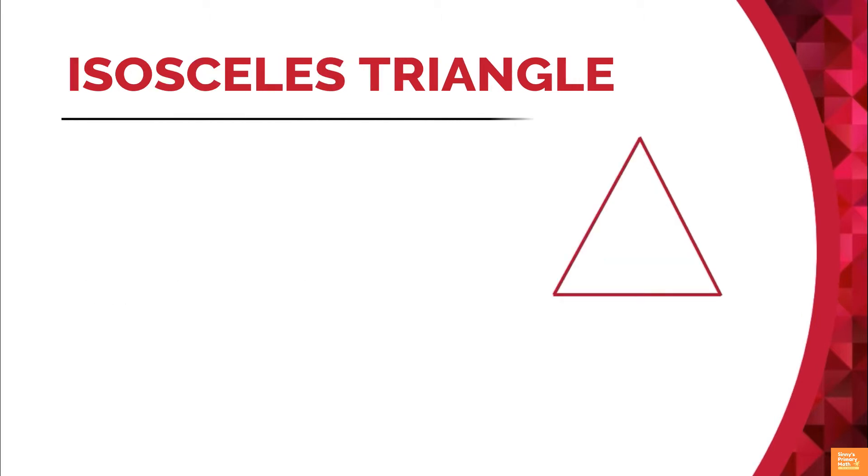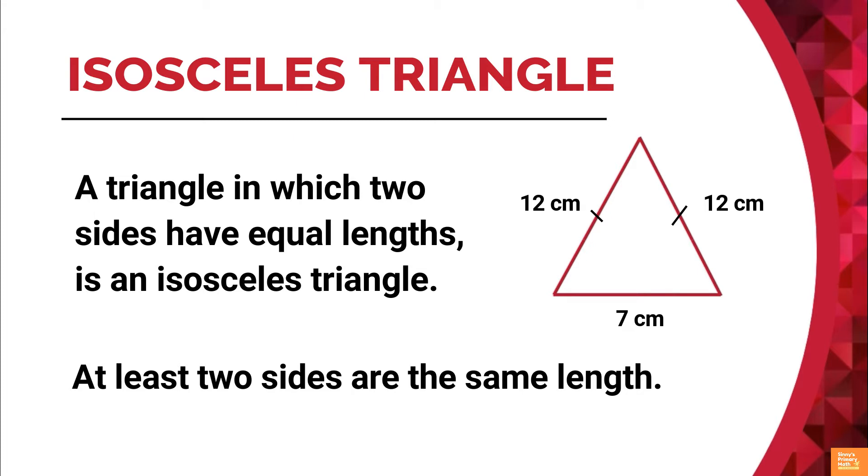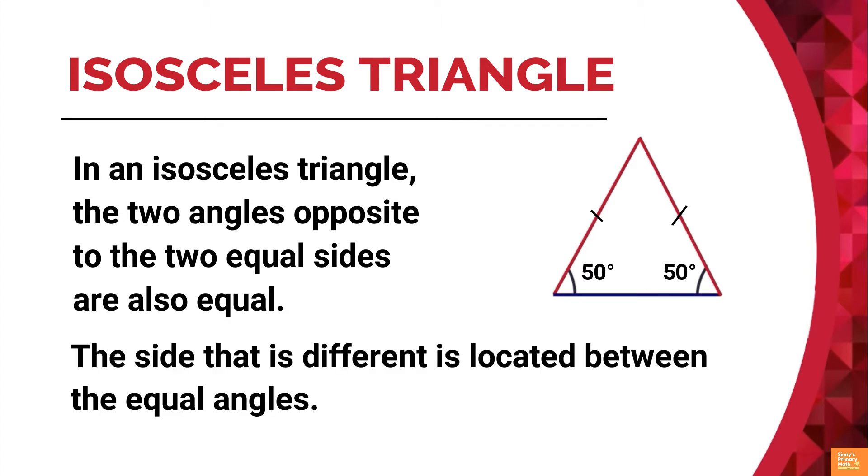Isosceles triangle: a triangle in which two sides have equal length is an isosceles triangle. At least two sides are the same length. In an isosceles triangle, the two angles opposite to the two equal sides are also equal. The side that is different is located between the equal angles.